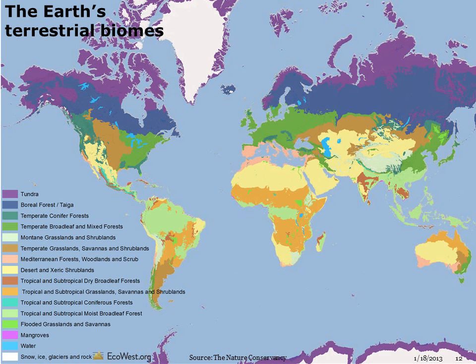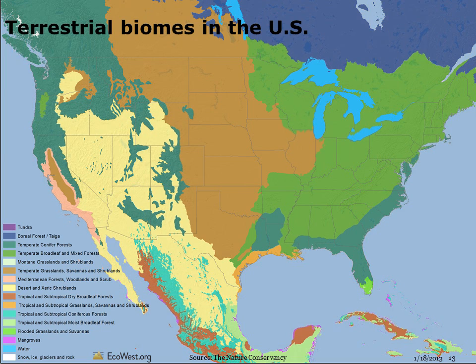Let's talk about biomes. An area's climate more or less determines what types of plants can grow there. At the broadest level, we can classify the planet's landmasses according to the predominant vegetation, or lack thereof. There are 16 terrestrial biomes, ranging from snow and tundra to tropical forests. Here's a close-up of the US. Much of the interior West is dominated by desert and xeric, or dry shrublands, but the higher elevations support temperate conifer forests. California has Mediterranean forests along much of its coast and the Sierra foothills.